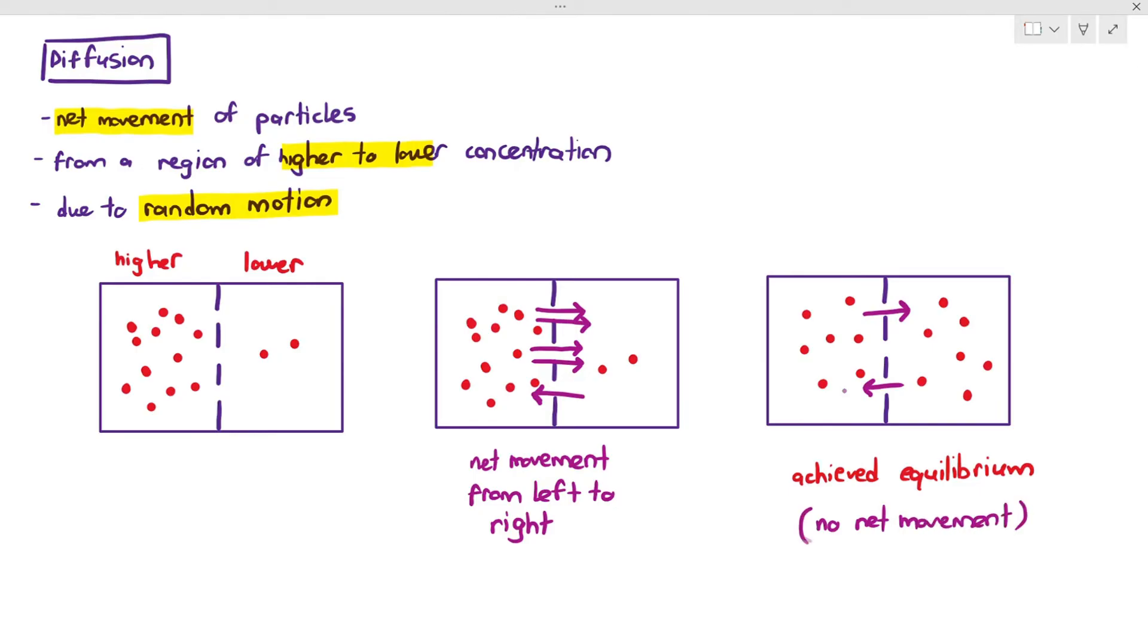But the interesting thing here is the movement from left to right and right to left is now equal, which I've represented in the number of arrows. One arrow moving to the right and one arrow moving to the left.